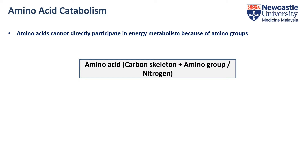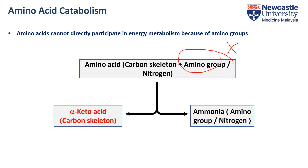We can use the amino acid for energy production, but we cannot use the whole molecule for energy production because the amino group will not be metabolised in the energy production pathway. So we catabolise the amino acid into two parts: the carbon skeleton in the form of alpha-keto acid, and the amino group in the form of an ammonia molecule.